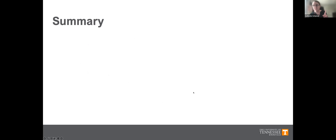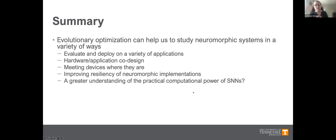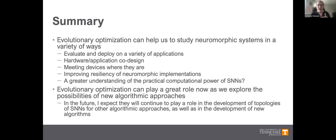To quickly summarize before the example: we are using evolution to study neuromorphic systems in a variety of ways — to evaluate and deploy on different applications, to do co-design, to meet devices where they are and leverage their characteristics within their constraints, and to improve the resiliency of neuromorphic implementations. Evolutionary algorithms can play a great role now as we're exploring new algorithmic approaches. In the future, I think evolution will continue to play a role in developing topologies for spiking neural networks, even as new algorithmic approaches emerge for determining synaptic weight values.